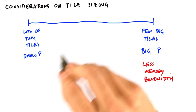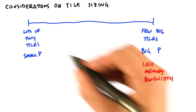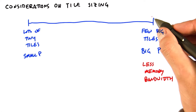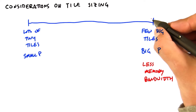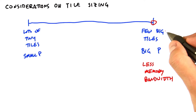In this particular problem, bigger tiles means less memory bandwidth. This is good. Generally, you want to make your tiles as big as can fit into a single thread block, because that minimizes overall memory bandwidth.